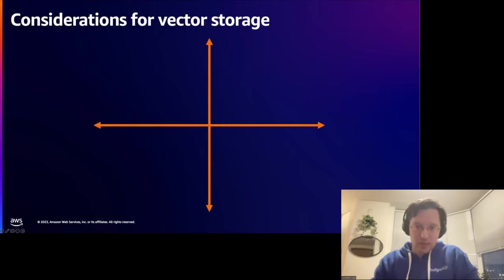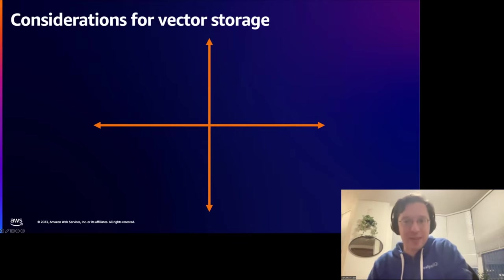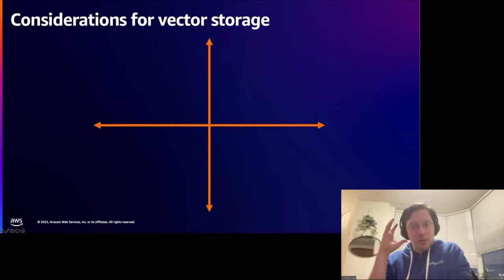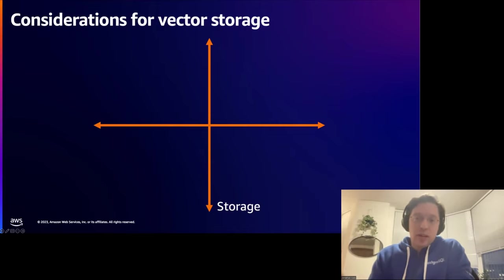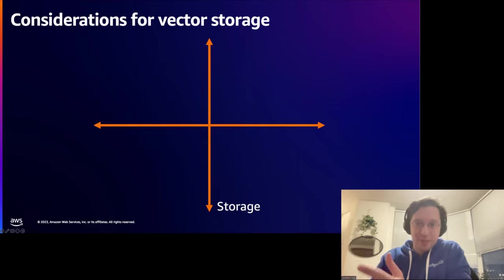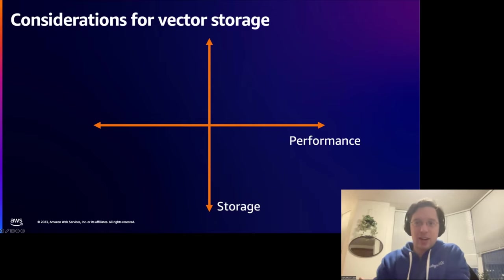One last thing before diving into PG Vector: with my app developer hat on, I need to consider what I want to do with vector data in my application. The first thing is storage — do I need my results as quickly as possible? Do I want to keep them in memory, or do I have so many results that I can't afford enough memory and need to keep them at the storage layer? Once I understand that, I might understand my performance tradeoffs — I may want the car that goes as quickly as possible, but I may not be willing to pay for it.